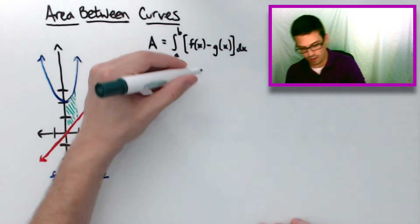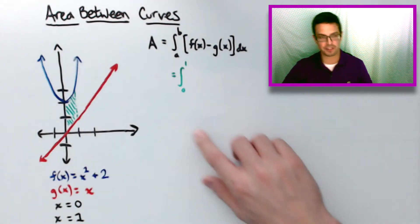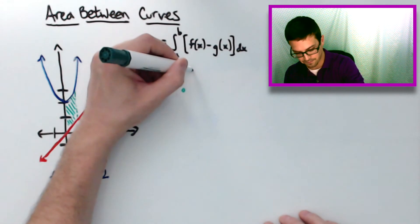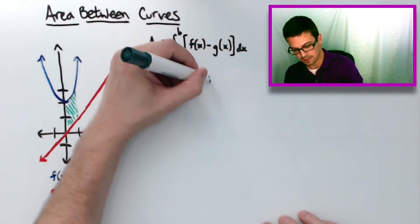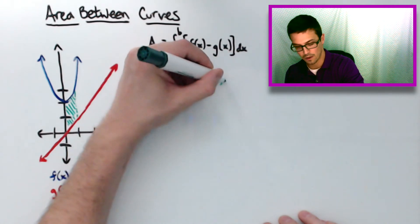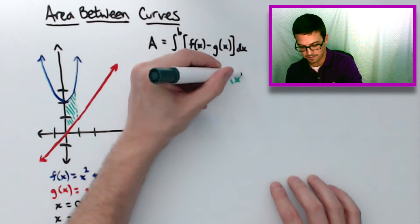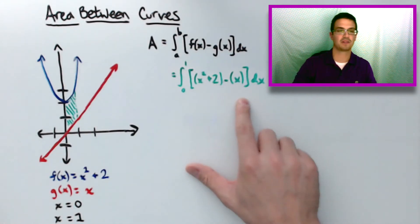From the a to b is going to be from 0 to 1, so I'm going to put the integral symbol from 0 to 1. f of x, I'm just going to fill in this f of x right here. Substitute it in. We have x squared plus 2 minus the g of x, which is x. So I'm going to put that over here. And you end up with something like this.